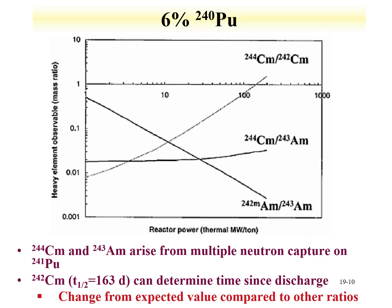Curium-242 can also be used to determine time since discharge, since it has a half-life of 163 days. It is expected to change relative to other ratios because of this relatively short half-life.